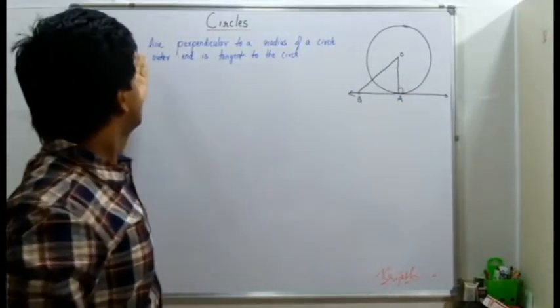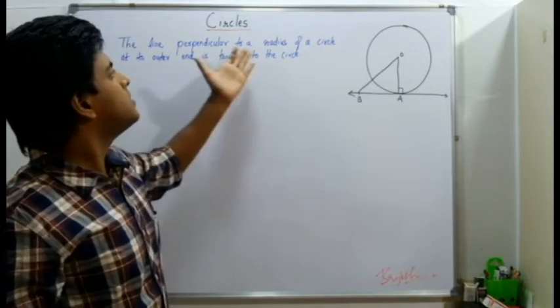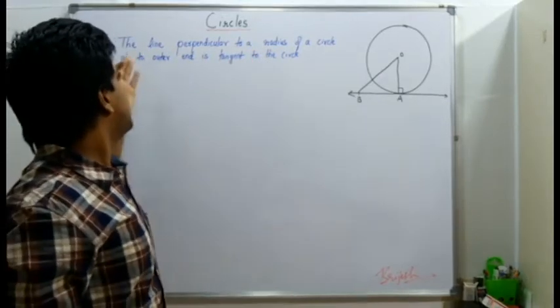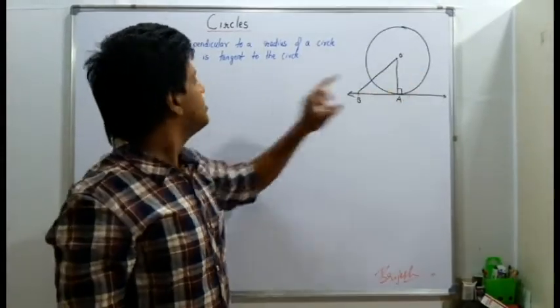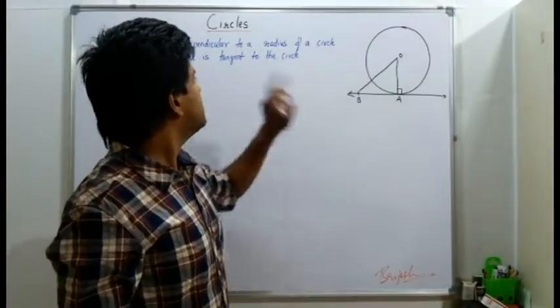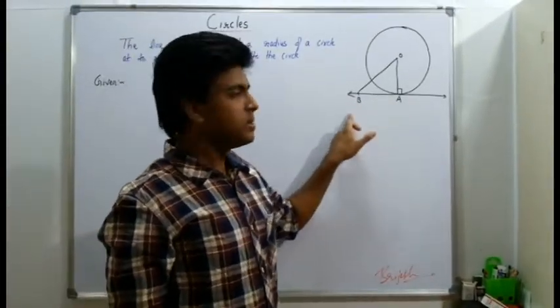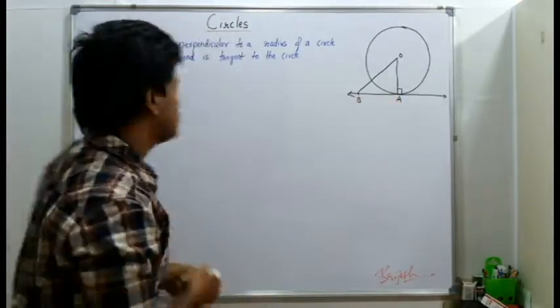This is the exact statement of the theorem: the line perpendicular to the radius of a circle at its outer end A is tangent. This line which is perpendicular to the radius is a tangent we have to prove.